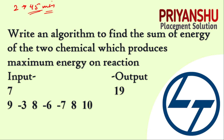The first question is: write an algorithm to find the sum of energy of two chemicals which produce maximum energy on reaction. So we have a list of chemicals with their energy values, and we need to find the maximum energy produced on reaction from any two chemicals.